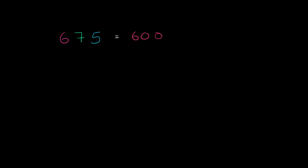The 7 is in the tens place. It represents seven tens, or 70. And then the 5 is in the ones place — it represents five.